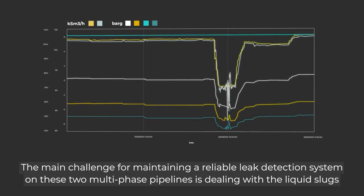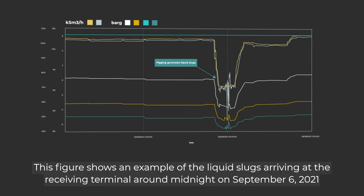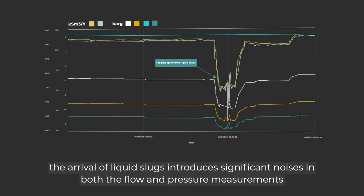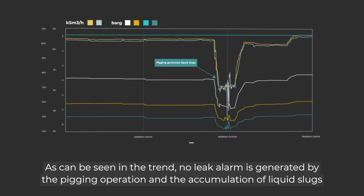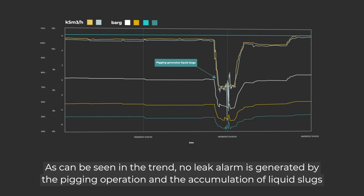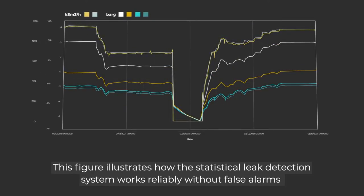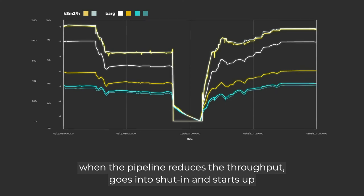The main challenge for maintaining a reliable leak detection system on these pipelines is dealing with liquid slugs. This figure shows an example of liquid slugs arriving at the receiving terminal around midnight on September 6, 2021. The arrival of liquid slugs introduces significant noise in both flow and pressure measurements. As can be seen in the trend, no leak alarm is generated by the pigging operation and accumulation of liquid slugs. This figure illustrates how the statistical leak detection system works reliably without false alarms when the pipeline reduces throughput, goes into shut-in, and starts up.